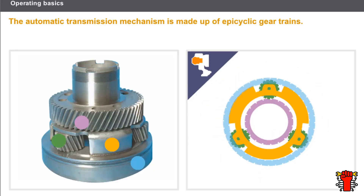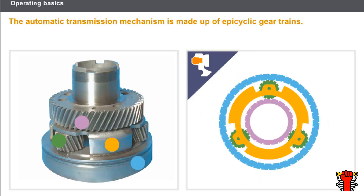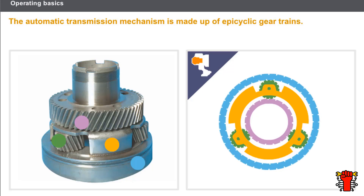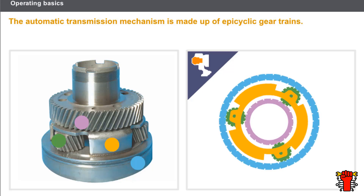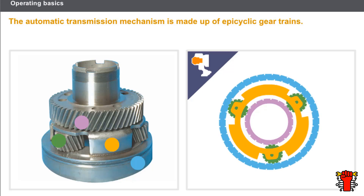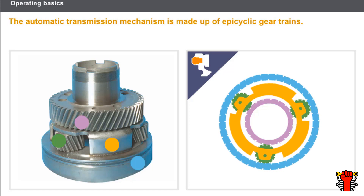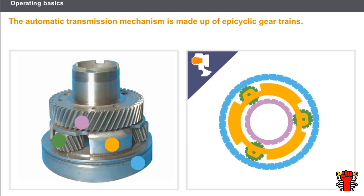The automatic transmission mechanism is made up of epicyclic gear trains — sets of gear wheels that provide different ratios according to the speed of rotation and how they are driven. This type of transmission has various advantages: several ratios can be obtained from a single epicyclic gear train; there is no discontinuity when changing from one gear ratio to another; and it can also transmit high engine torque.